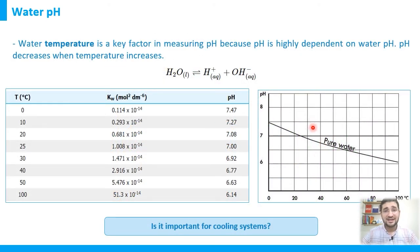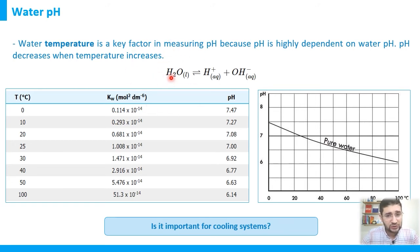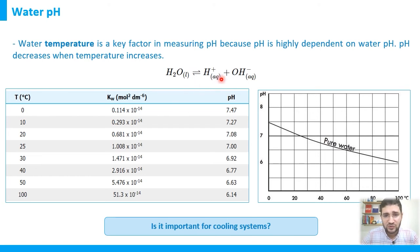An important point: if you measure a water sample in the field and get pH 7.5, but someone else measures the same sample in the lab and gets a different value, it is because pH is temperature dependent. When temperature increases, the dissociation of H₂O into H⁺ and OH⁻ increases, producing more H⁺ ions and causing the pH to decrease.